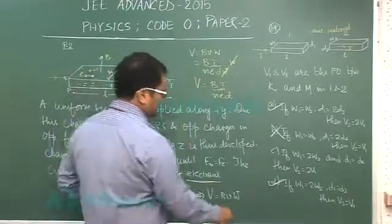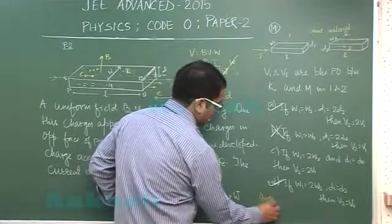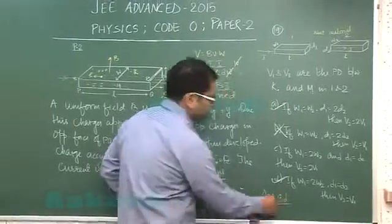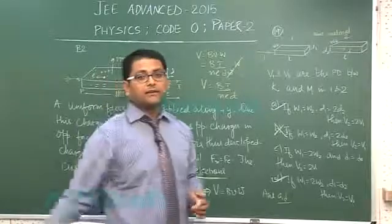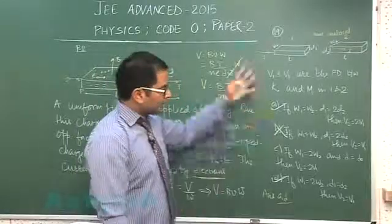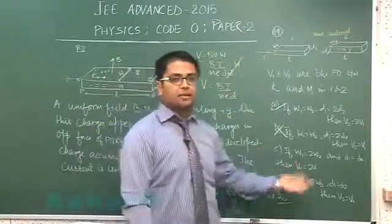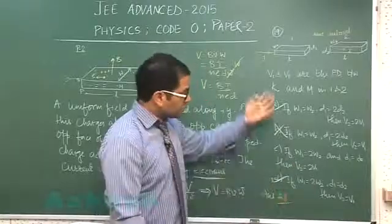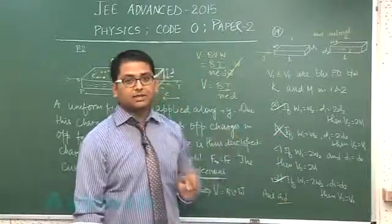So for this comprehension we will be having correct option as A and D. One thing you should be very clear: the comprehension may have more than one option so you have to check each and every option meticulously.